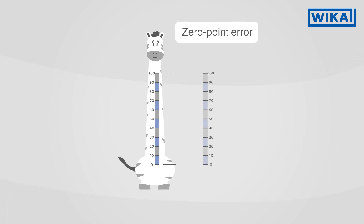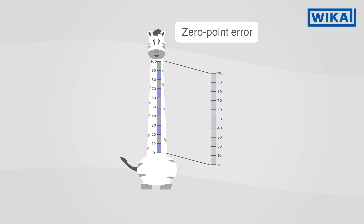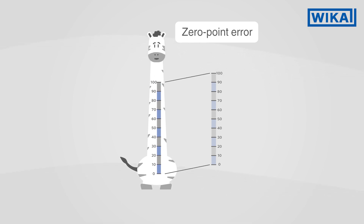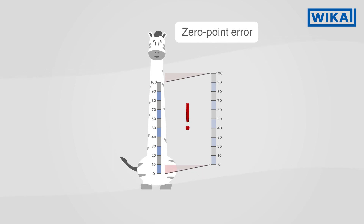The zero point error describes the deviation of the start of the measuring range from its set value. It arises when the chart has been set too high or too low. As a result, the whole scale shifts and all the measuring results will deviate from the actual value by exactly this value.